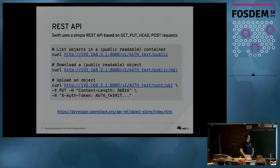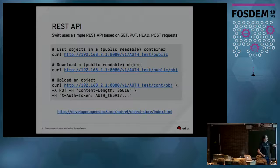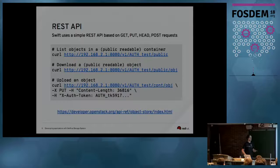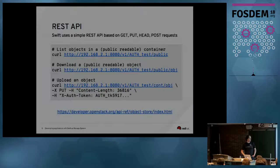Even a simple GET request is a simple REST API request. When you have an endpoint like this, with parts such as an account name like 'ALS test' and a container name like 'public', doing a GET returns a list of objects — at least if this is a public readable container. You can also download objects by appending the object name at the end of the URL. For uploading objects you need some kind of authorization — in this case, XAUTH tokens sent along the request — and this token authenticates you to the Swift cluster, ensuring you're allowed to write data there.